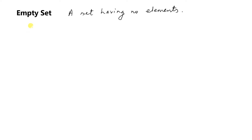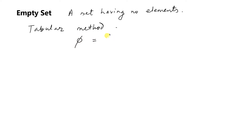In the tabular method, the empty set is represented using phi. Phi is equal to open and close curly braces with nothing inside — this is called an empty set.